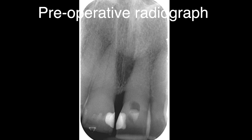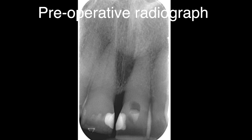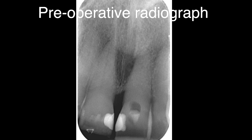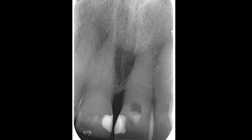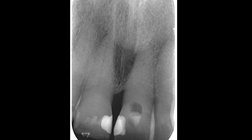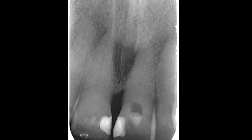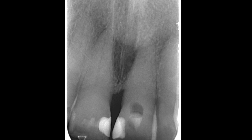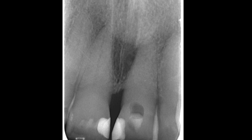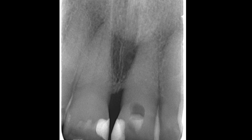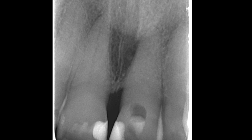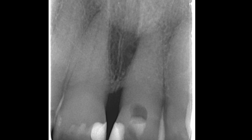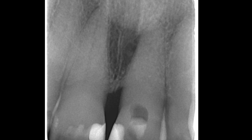Here is the pre-operative radiograph of the maxillary left central incisor. There's a lateral radiolucency and the root canal is very sclerosed. An attempt had been made to carry out root canal treatment but the dentist had been unable to locate the root canal.